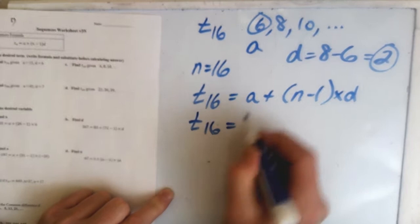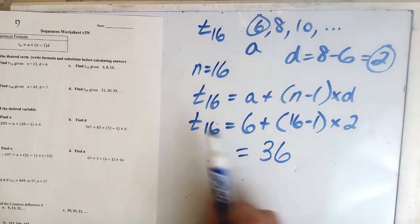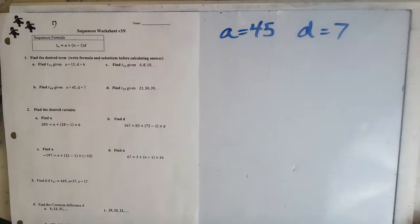We're going to plug in all our letters — A, D, and N. All the numbers are on the right side, so it's BEDMAS. We just plug it into the calculator and get our answer. So T16, the 16th term — following BEDMAS, the answer is 36.